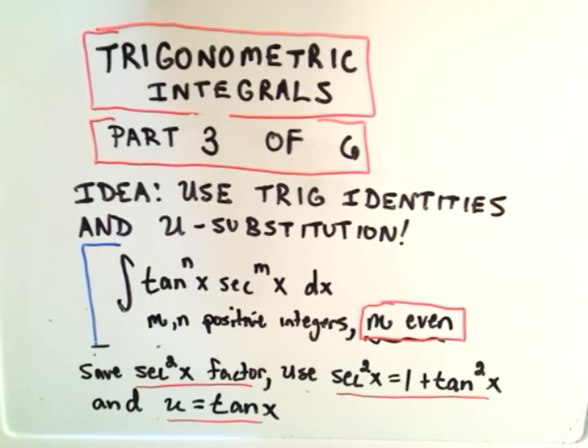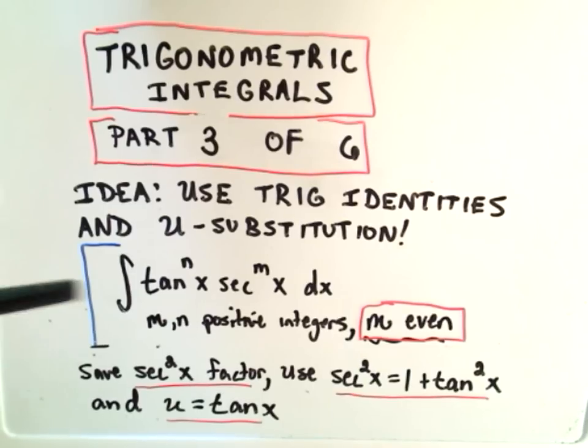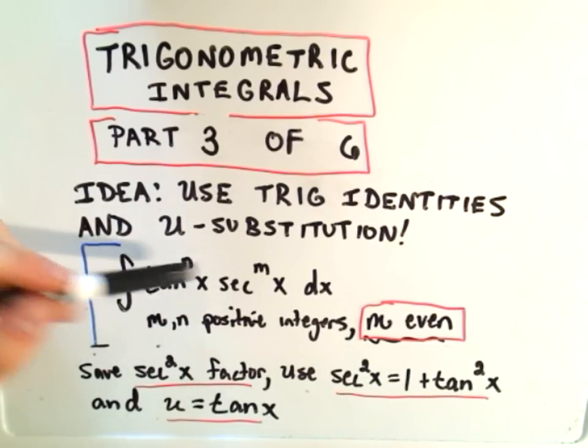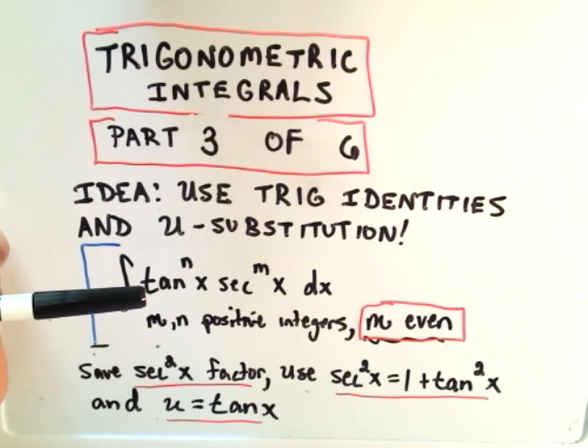Alright, in this video we're going to do more trigonometric integrals. Again, kind of the cookie cutter cases here, but they are important. So in this case you have products of tangent and secant. In this case they're going to be positive integers, but we're going to make the restriction also that n is an even integer, an even positive integer, even a whole number.